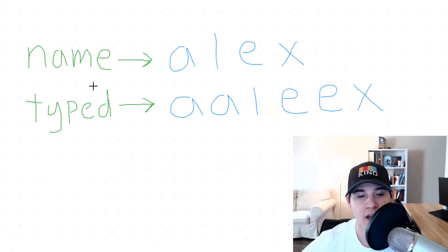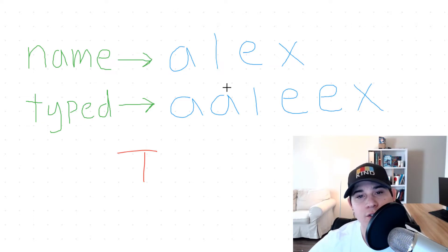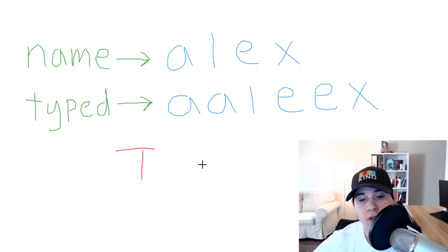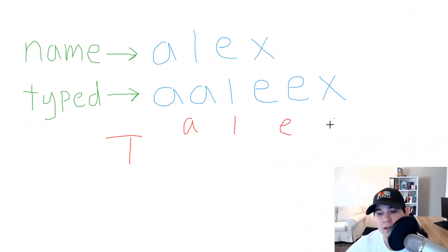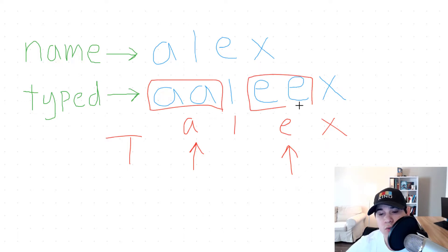We have two strings, name and typed, where name is equal to Alex and typed is equal to A-A-L-E-E-X. Given this input, we would return true from this function. The reason is because the characters in our typed string are happening in the same order as the characters in our name string — we have an A, an L, an E, and an X. The A character and the E character are long pressed because we have two A's and two E's, but in our original name string, we only needed one A and one E.